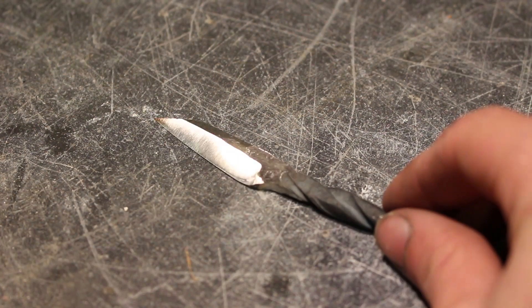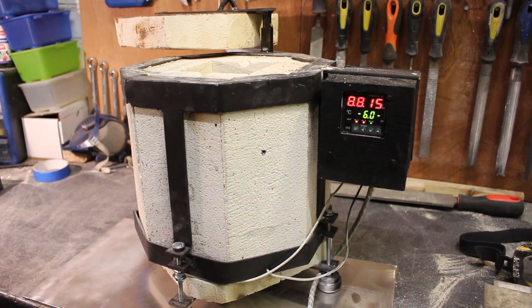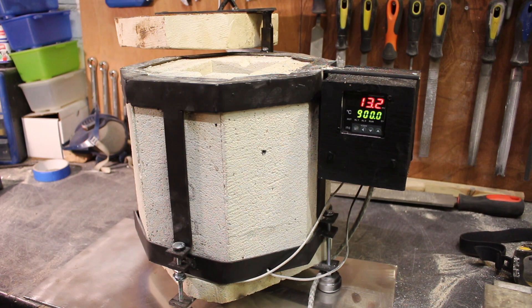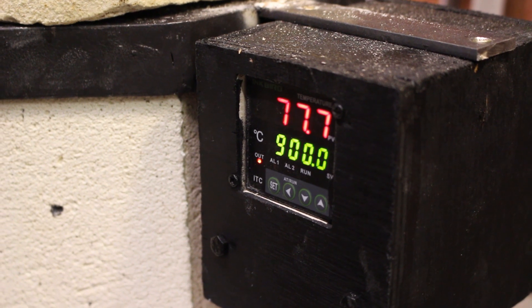And then the knife is done and ready for heat treatment. I'm going to be doing my heat treatment in my electric foundry that I made a couple of weeks ago and I've got a full tutorial on how to make it. This is really good for heat treatment because you can control the temperature exactly, but you could also just use a regular forge.